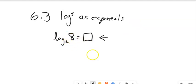In other words, another way to write this is 2 to the power of the answer of the output of the logarithm is the input into the logarithm, 8.